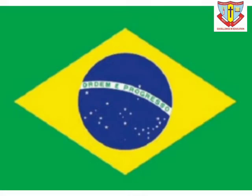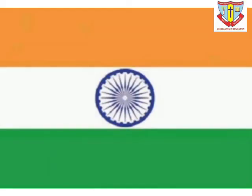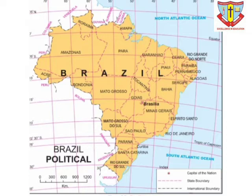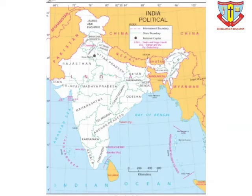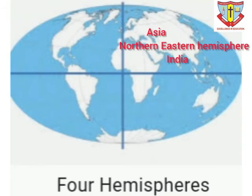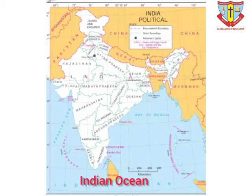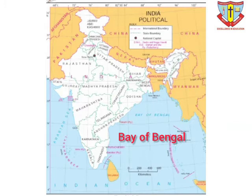The question arises: why is India's physical features compared to Brazil only? It's because Brazil is similar to India in some factors, yet also dissimilar in others. India is located in the northern and eastern hemispheres of the earth. It is located in the southern part of the Asian continent, with the Arabian Sea, Indian Ocean, and Bay of Bengal making it a peninsular country.